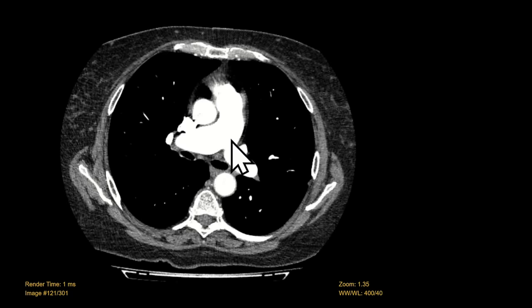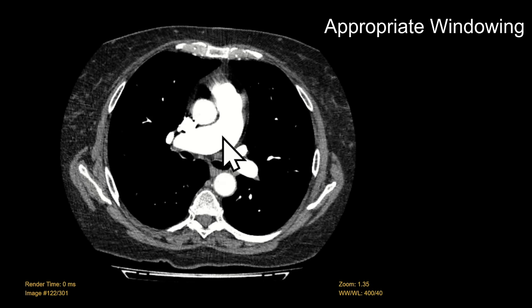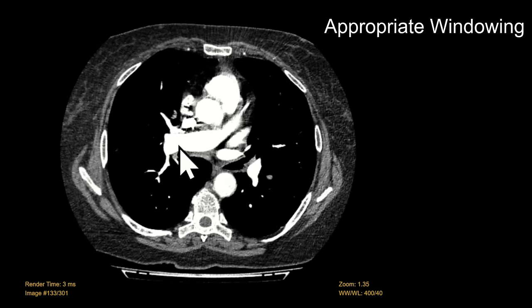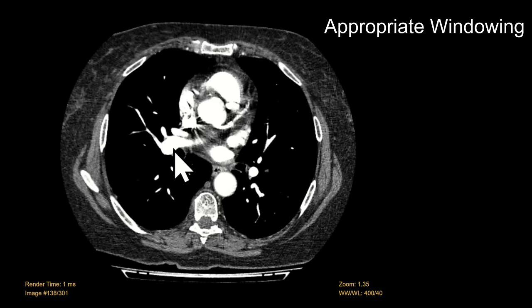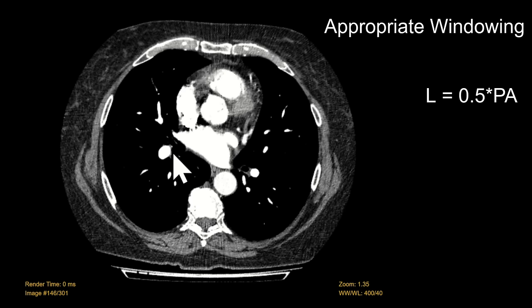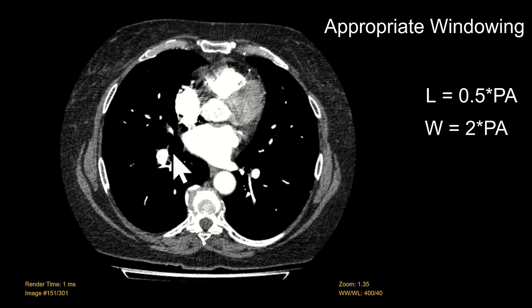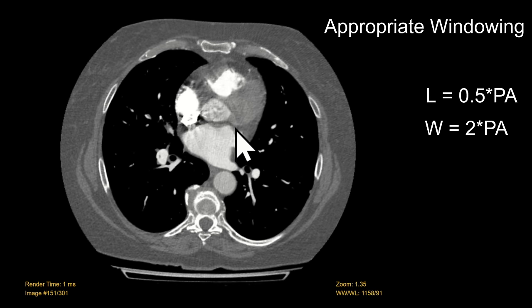Based on the opacification, we want to window the study appropriately. If you don't window it, the pulmonary arteries can look very bright and it can obscure small PEs. Appropriate windowing is to set the window level at about half of the main PA attenuation and the width at about double the main PA. Here the main PA was about 600, so we set the window width to about 1200 and the level to about 300.